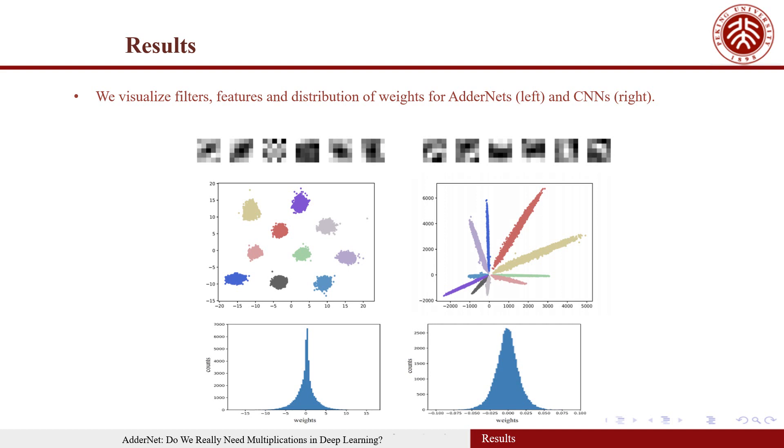The distribution of weights with AdderNets is close to a Laplacian distribution, whereas that with CNNs looks more like a Gaussian distribution. The reason is that the prior distribution of AdderNets is Laplacian distribution.